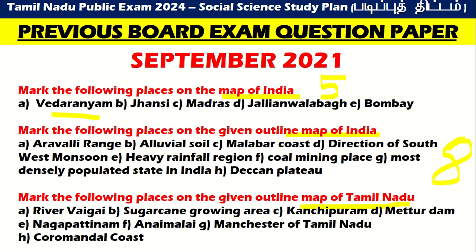September 2021 history map: mark Vedaranyam, Jhansi, Madras, Jallianwala Bagh, and Bombay on the India map — that is 5 marks. Geography map of India: Aravalli Range, alluvial soil, Malabar Coast, direction of southwest monsoon, heavy rainfall region, coal mining place, most densely populated state, and Deccan Plateau. Map of Tamil Nadu: River Vaigai, sugarcane growing area, Kanchipuram, Mettur Dam, Nagapattinam, Anaimalai, Manchester of Tamil Nadu, and Coromandel Coast.